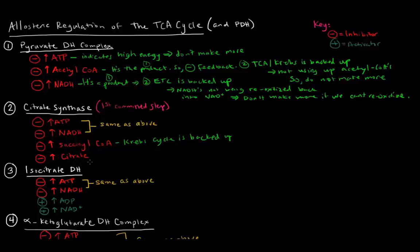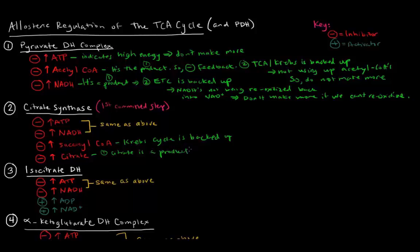High levels of citrate also inhibit citrate synthase. If there's a bunch of citrate, that could indicate the Krebs cycle is backed up — if citrate is not moving on further. In addition, citrate is also the product of that reaction, so it's a feedback inhibitor. And it also indicates the Krebs cycle is backed up because that citrate is not being converted over.